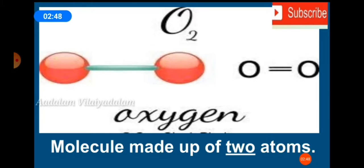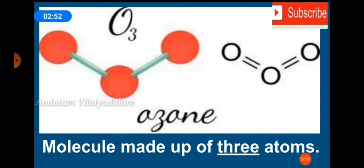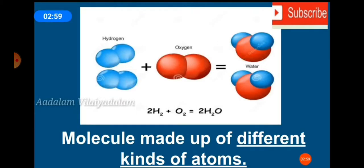Oxygen is a molecule made up of two oxygen atoms. Ozone is a molecule made up of three oxygen atoms. Water is a molecule made up of different kinds of atoms — two hydrogen atoms and one oxygen atom make the water molecule.